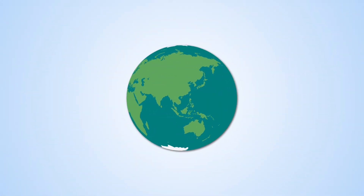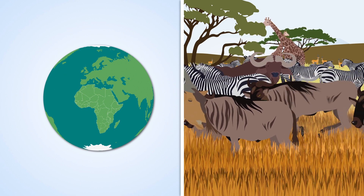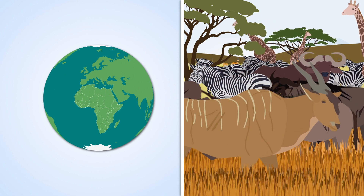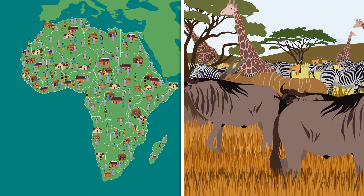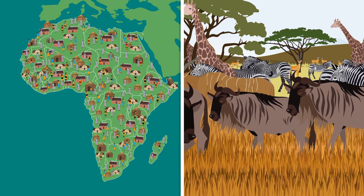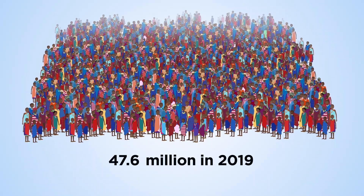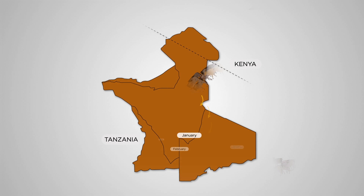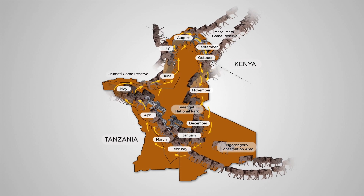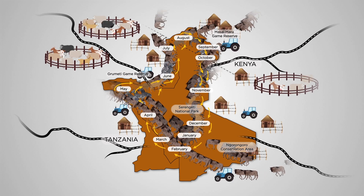Unfortunately, wildlife populations are declining in many areas in Africa. One big problem is that protected areas, such as game reserves and national parks, are too small. Human settlements outside of these areas are expanding and blocking the migration pathways these animals use. In Kenya, the population has increased from 5.4 million people in 1948 to 47.6 million people in 2019, an increase of 780%. As the population has increased, so has the rate of habitat loss, as land is used for houses and farming, leading to the construction of fences and roads, which create barriers to migration.